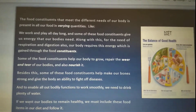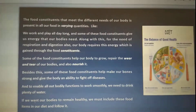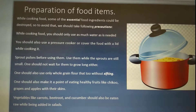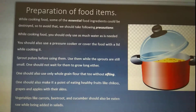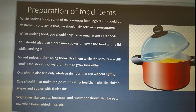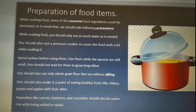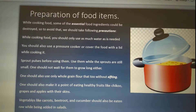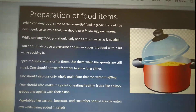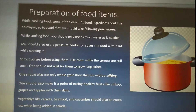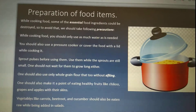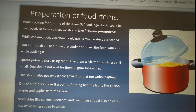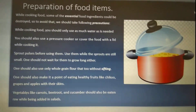We should drink plenty of water. While cooking food, water should be used only as much as needed. Use a pressure cooker or cover the lid while cooking. Sprout pulses before using them. Eat fruits with their skins. Vegetables like carrot, beetroot, and cucumber should be eaten raw.